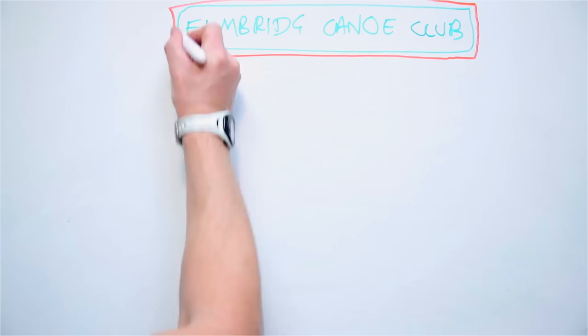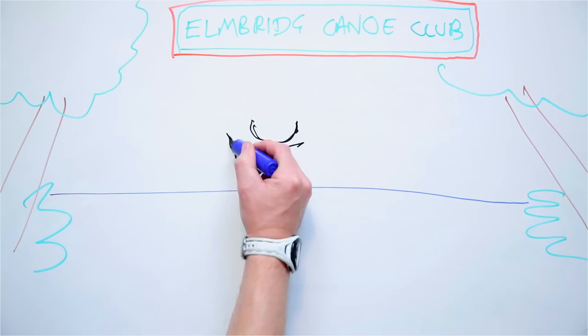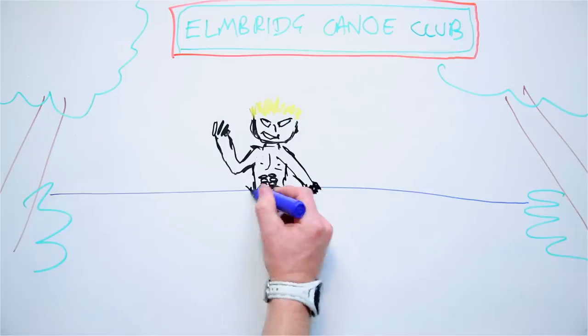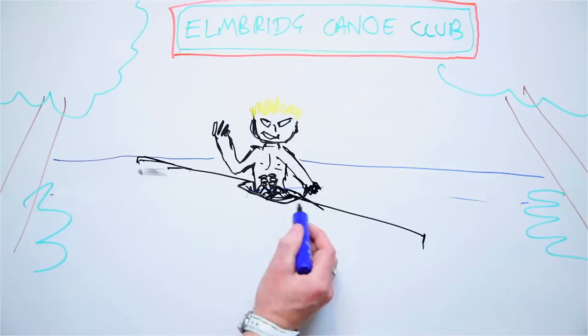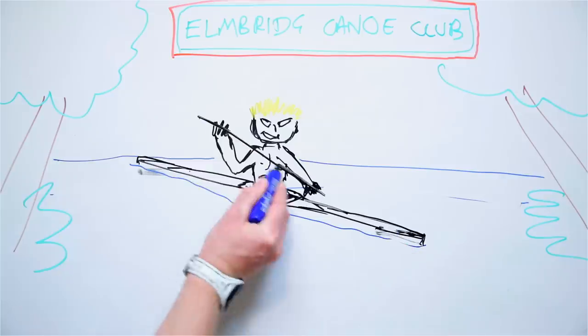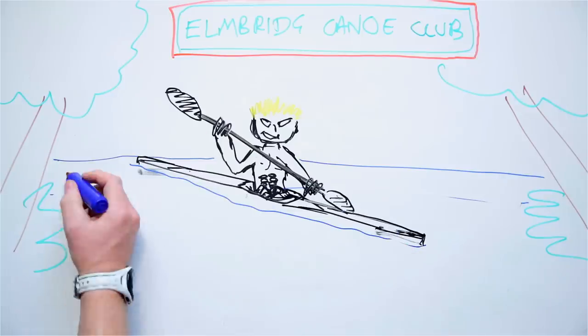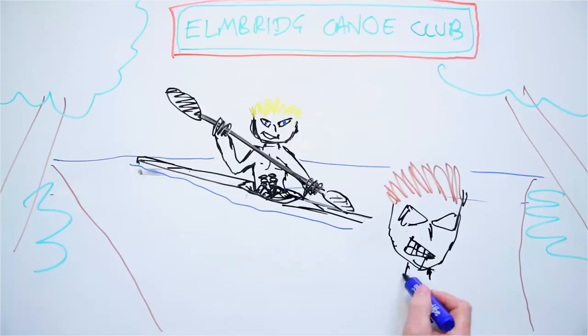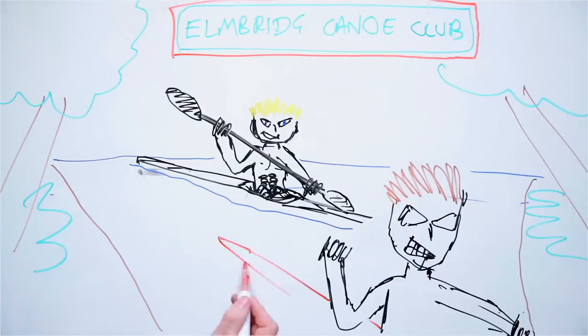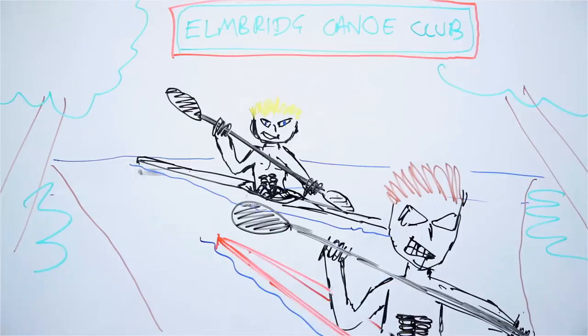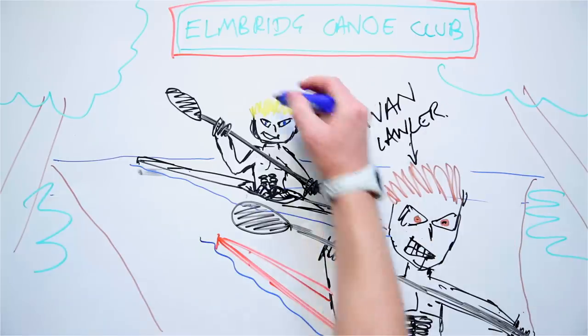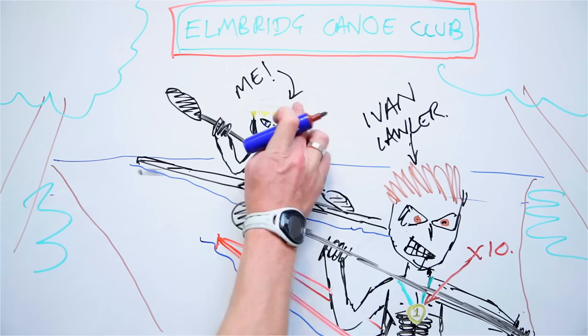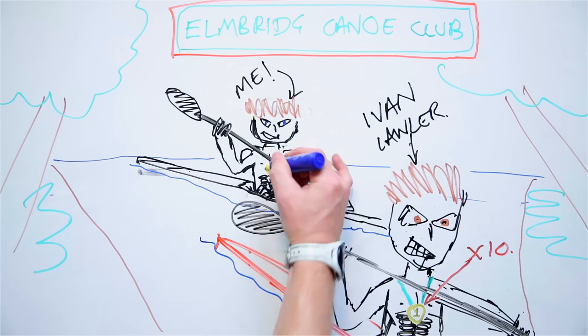By age 15, Elmbridge Canoe Club had become my second home and training became a priority. I often missed social events with my school friends because I was away racing pretty much every weekend. But I was having a great time and I made some fantastic friends in kayaking. The older paddlers at Elmbridge Canoe Club such as Ivan Lawler had a huge impact on my upbringing. Ivan was an Olympian and a multiple world champion and at the absolute top of his game in marathon racing. I basically wanted to be Ivan Lawler.